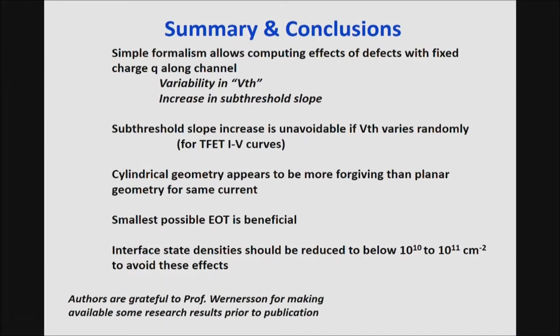In summary: there is a simple formalism to compute the effects of fixed charge defects along the channel, showing variability in threshold voltage and increase in subthreshold slope — this subthreshold slope increase is unavoidable if VTH varies randomly by any mechanism. The cylindrical geometry appears more forgiving than the planar geometry. It is beneficial to have the smallest effective oxide thickness, and interface state densities should be reduced to the order of 10^10 to 10^11 per square centimeter to avoid these effects in different structures.